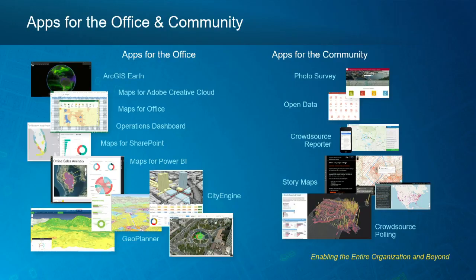We talked a lot yesterday about conveying the importance of why dealing with invasive species is so important — from an environmental and economic standpoint — to the public and partners. We also need to convey the impact that our programs are having and the impact that invasive species are having on the landscape. Story maps are a great way to convey that information, and I've seen a lot of that being done in western states already.